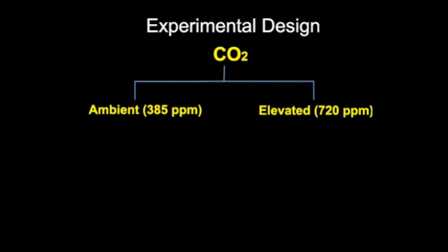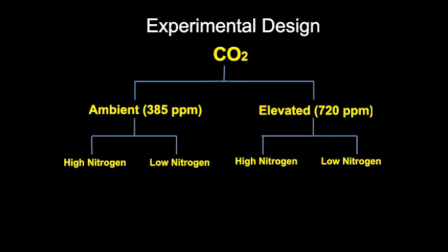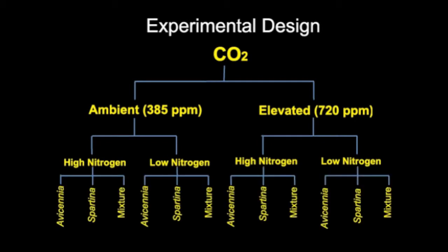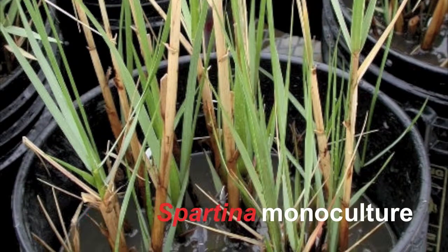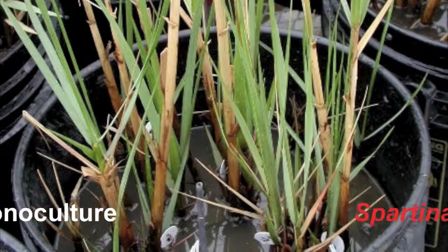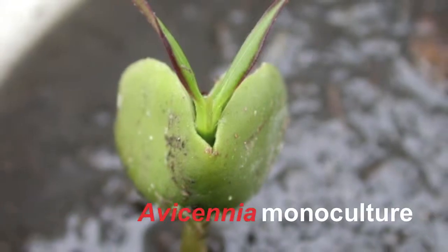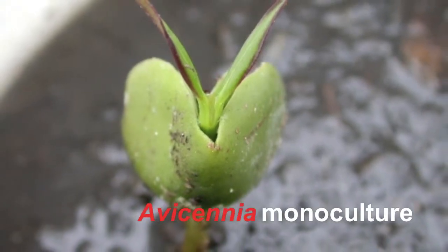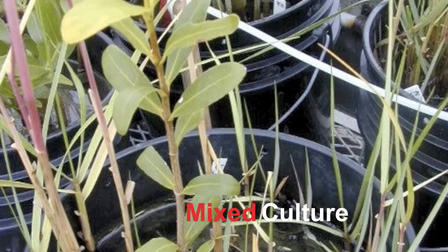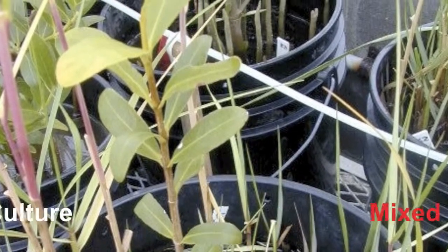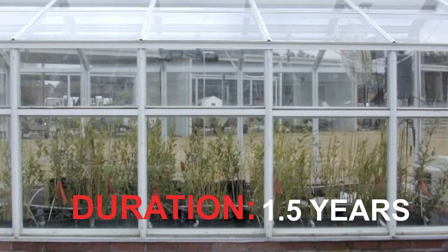In this study, the mesocosms were subjected to either ambient or elevated CO2, as well as to either high or low availability of nitrogen in the soil. Three different plant assemblages were tested: Avicennia alone, Spartina alone, and a mixture of the two species. Propagules of the black mangrove were added to the mesocosms to mimic the natural dispersal process whereby they invade salt marshes. The experiment lasted a year and a half to allow sufficient time for a response.